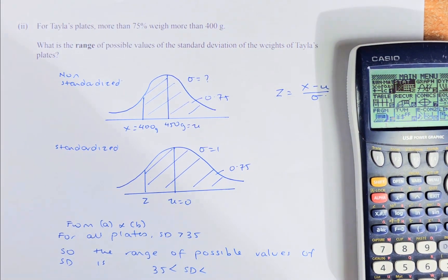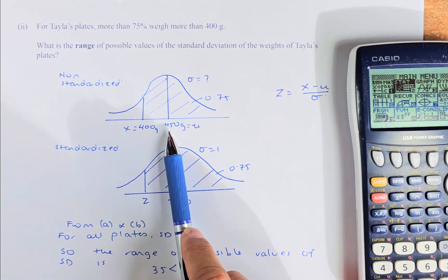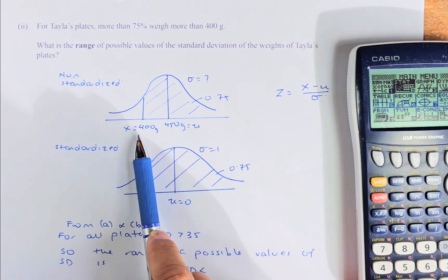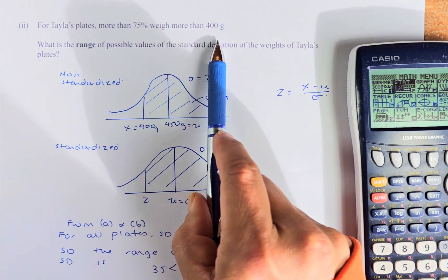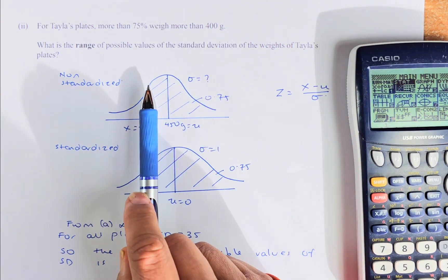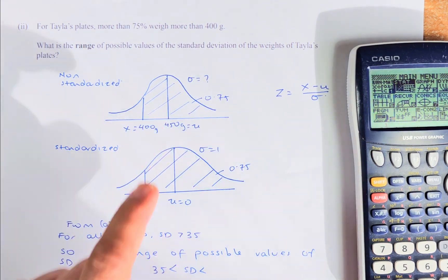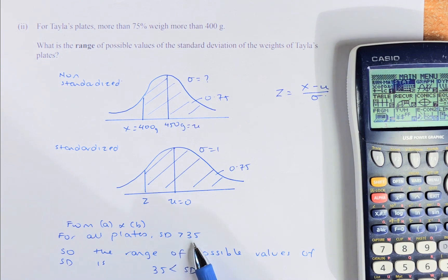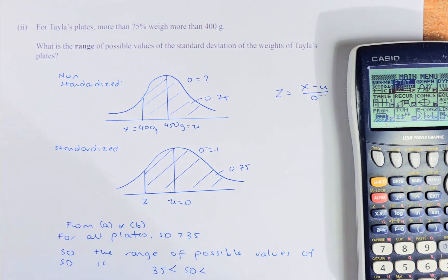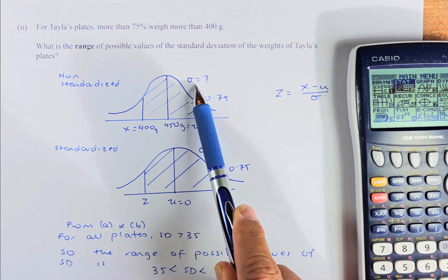For Taylor's plates, more than 75% weigh more than 400 grams. We know that the mean was 450, 400 has to be on the left. And 75% weighs more than 400. So it's going to be this area here is 0.75. What is the range or possible values of the standard deviation of weight of Taylor's plates? Remember that in part A and part B, the standard deviation was 35. So we remember that it's more than 35.